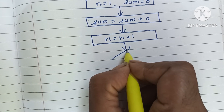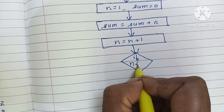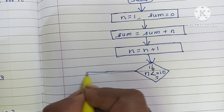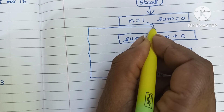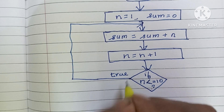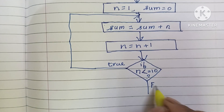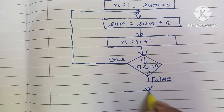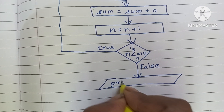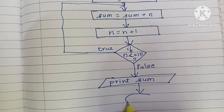Next, comparison is done within a diamond shape. We write: if n is less than or equal to 10. If this condition is true, we go back to calculate the sum value again. If this condition is false, we print the output value. The output value is written within a parallelogram shape. Finally, we stop the flowchart using a stop statement.